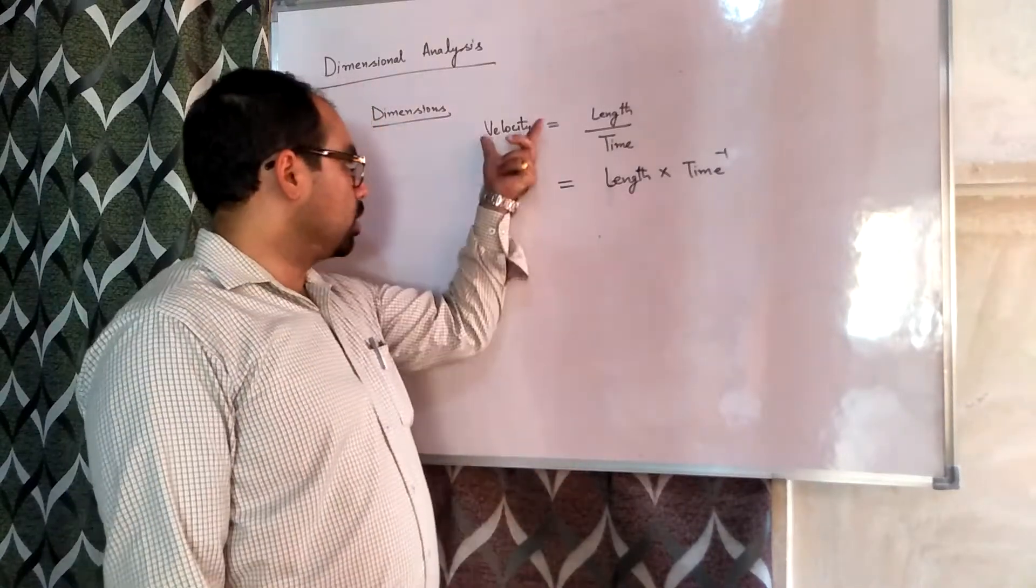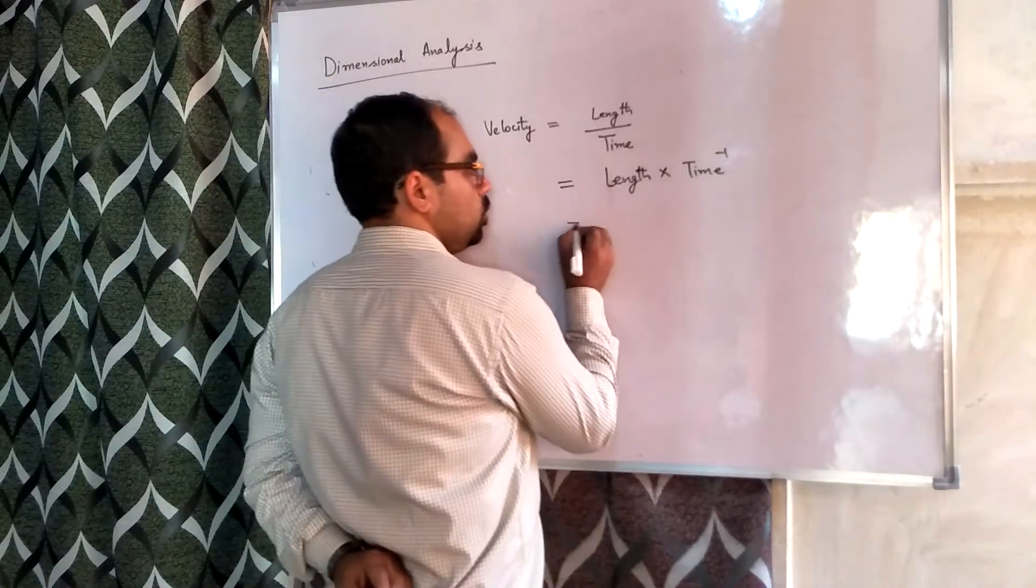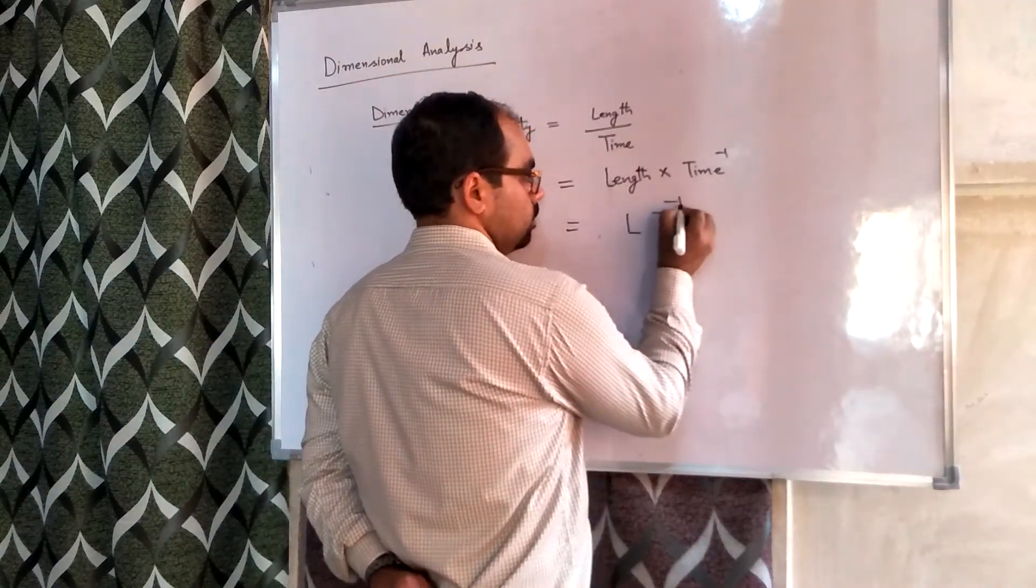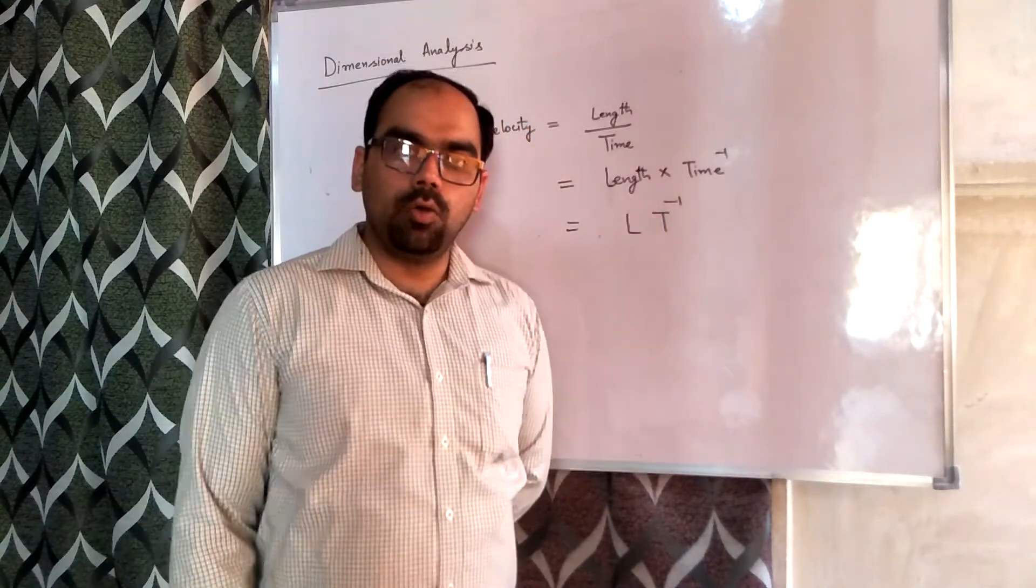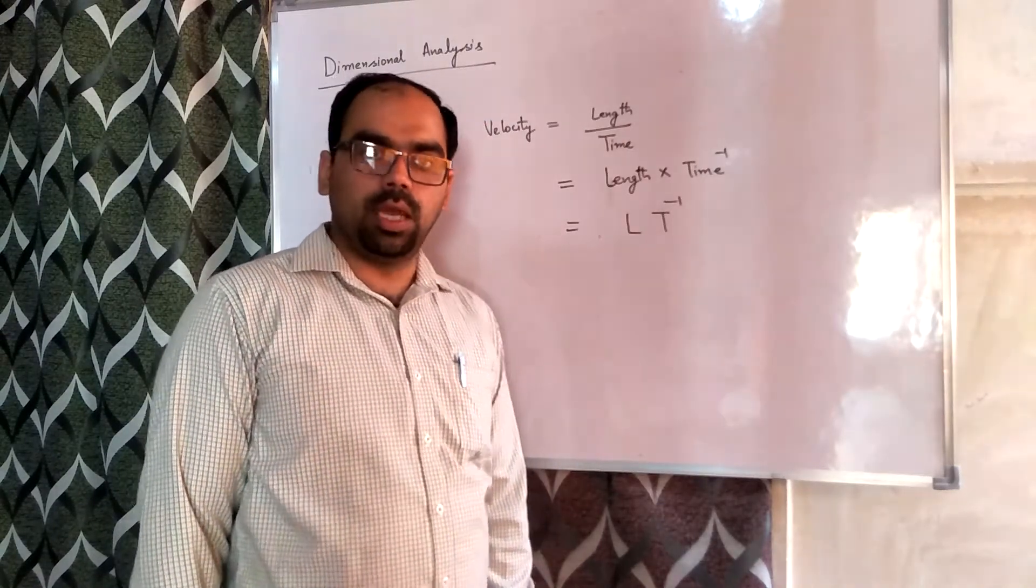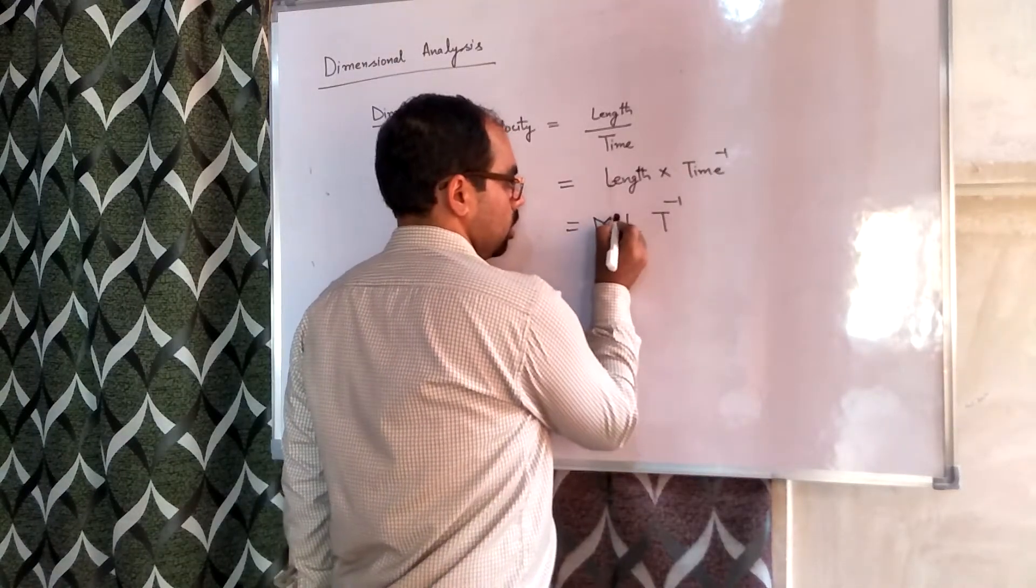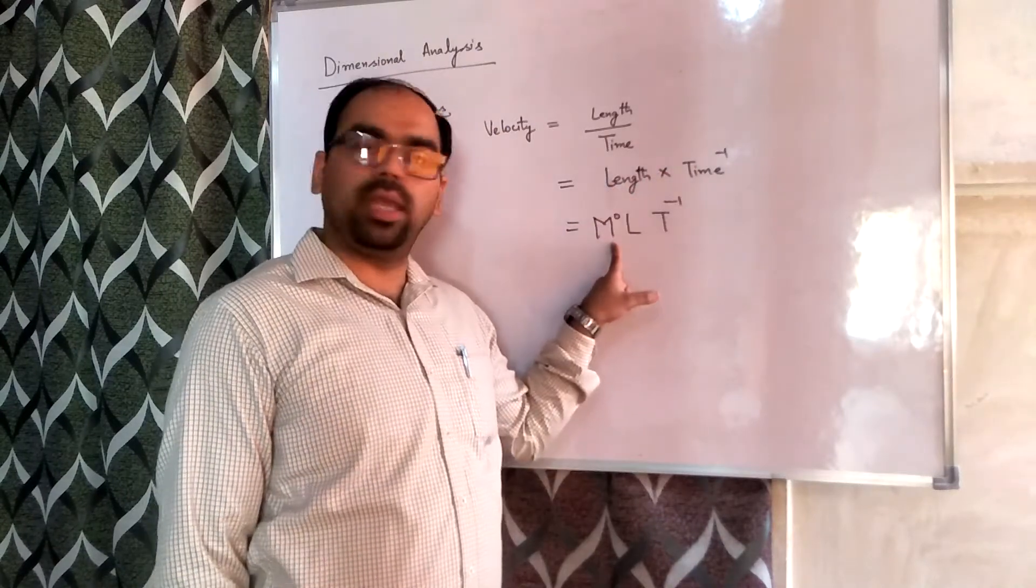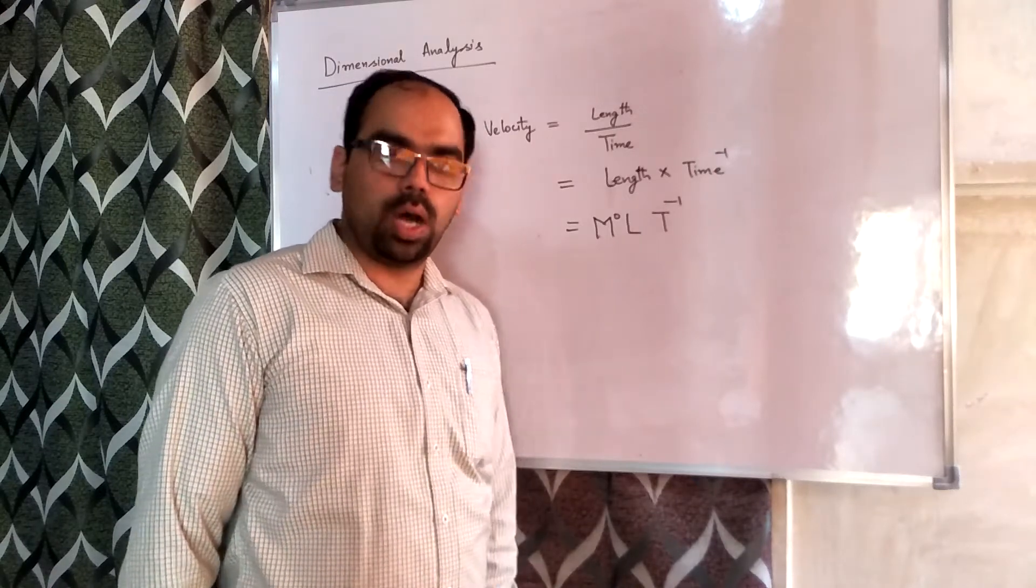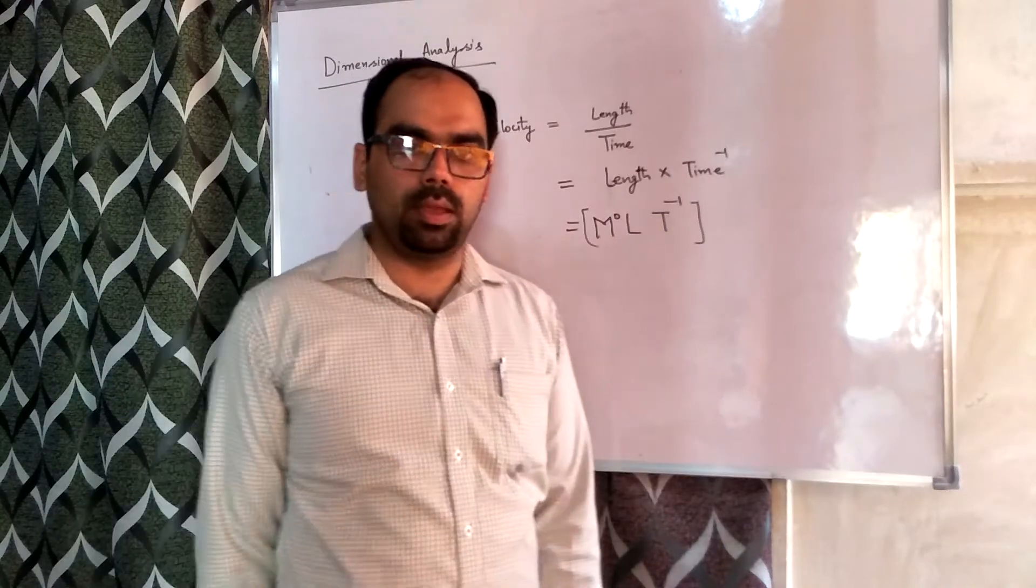So that we can easily represent the derived physical quantities. In terms of velocity, we are going to use length capital L and capital T for time. Now we have three principal physical quantities which are mass, length, and time. For representing this, we are going to use these three. Here mass is absent, so we are representing mass with a power zero. Anything raised to power zero means one, so we can lose this.